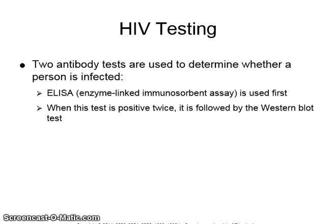Two antibody tests are used to determine whether a person is infected. The ELISA, or enzyme-linked immunoabsorbent assay, is used first. When this test is positive twice, it is followed by the Western blot test.